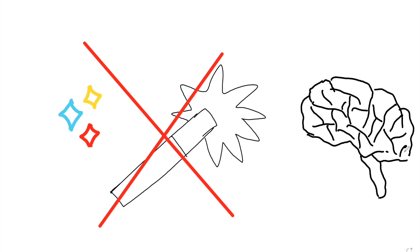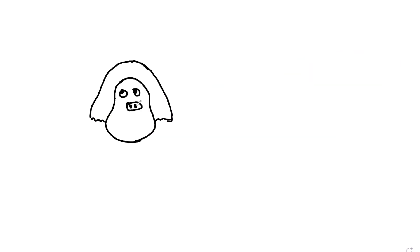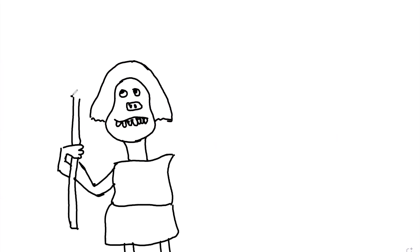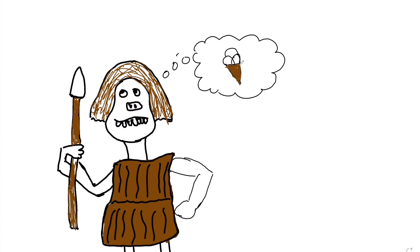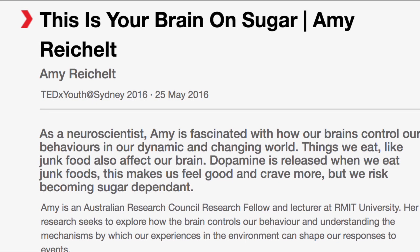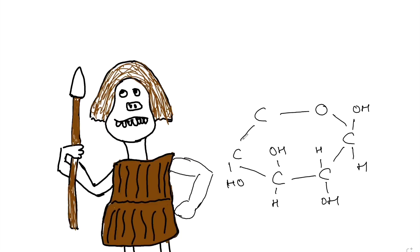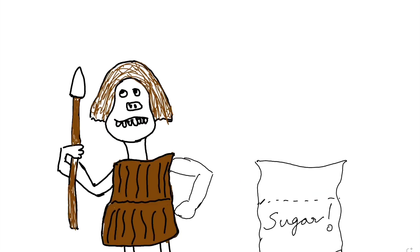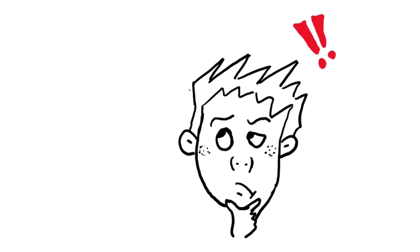In fact, these cravings are no different from the ones our ancient ancestors experienced. According to the article 'This Is Your Brain On Sugar' by Amy Reichelt, the diets of ancient humans consisted of large amounts of glucose, which is simple sugar that gives organisms energy.